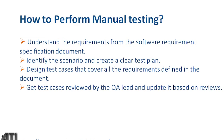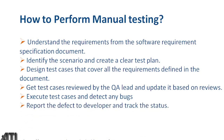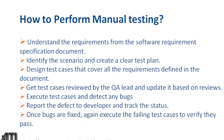Then we need to get the test cases reviewed — by our peers or lead, doing peer-level review and QA lead-level review. Update them based on the reviews, then execute the test cases and detect any defects or bugs. Whenever we find a defect, we log it and report it to the developer and track its status. Once bugs are fixed, we re-execute the failing test cases to verify they pass.